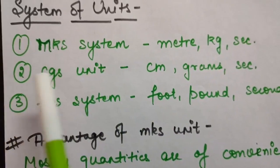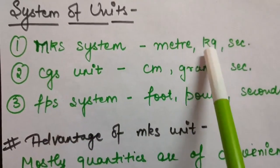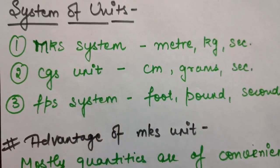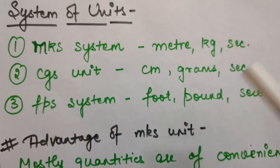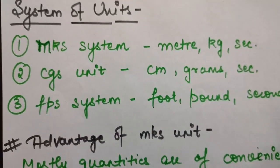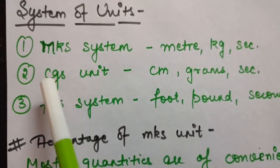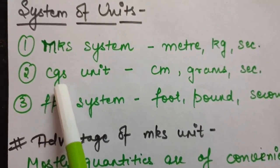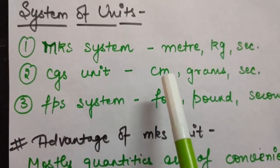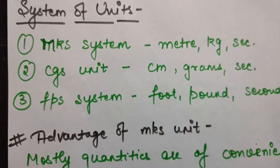What is the MKS system? Here M stands for meter, K for kilogram, and S for second. That means if you are dealing with the MKS system, you will be taking any quantity in either meters, kilograms, or seconds — that is for length, mass, and time. Similarly for the CGS system, C is for centimeters, G is for grams, and S is for seconds. If you are dealing with the CGS system, then you will take centimeter, gram, and second for length, mass, and time respectively.